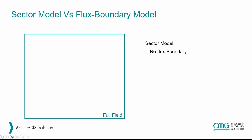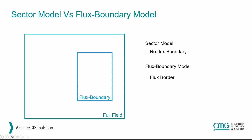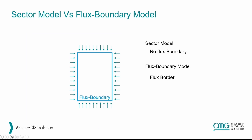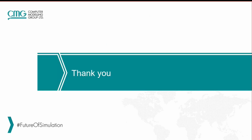Now let's see how the flux boundary model works. In this model, we select the flux boundary sector and run the full field model. With this technique, the flux or pressure occurring at the border of the sector is being recorded on a separate file. This information is going to be used in the reduced run to replicate the movement of fluids or pressure distribution along the borders during runtime. Thanks for watching — I hope you find this information useful and see you next time in our next video.